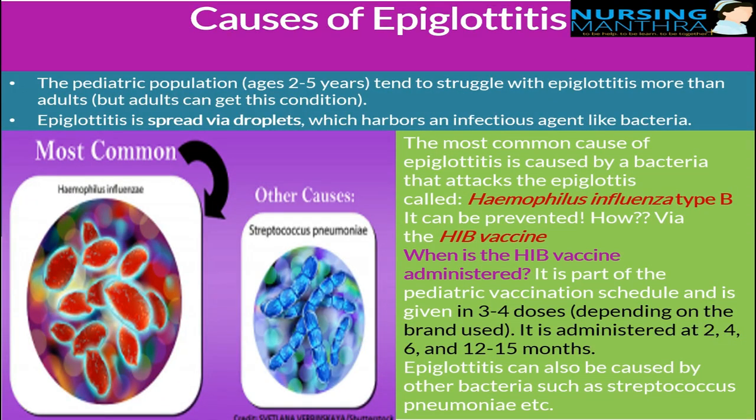Causes of epiglottitis: the pediatric population aged 2 to 5 years tends to struggle with epiglottitis more than adults. It is spread by droplets which harbor infectious agents like bacteria — Streptococcus pneumoniae and Haemophilus influenzae. The Hib vaccine should be administered in 3 to 4 doses depending on the brand, given at 2, 4, 6 and 12 to 15 months. Streptococcus pneumoniae can also cause epiglottitis.